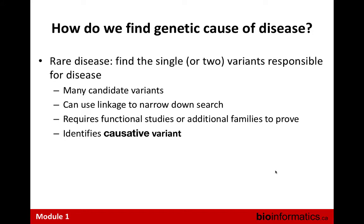For rare diseases, we're looking for a single or two variants responsible for a disease. In any patient's genome there are ballpark several million variants relative to a reference, and we need to distill it to the one or two that cause the disease. Many can be thrown out right away — if a variant is present in 30% of the population and you're looking for a disease present in 0.00001% of the population, that variant goes out the window. That's filtering by population frequency.